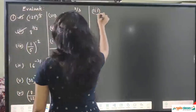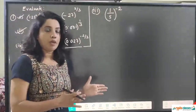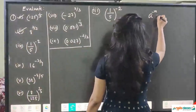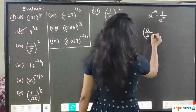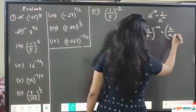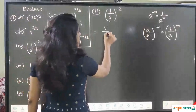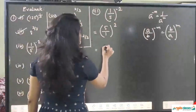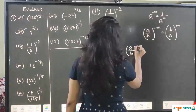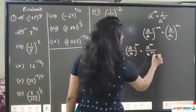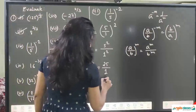Question 3 is (1/5) whole to the power minus 2. The power is negative, so we must first convert it to positive. Using the property (a/b) to the power minus m equals (b/a) to the power m, we write (5/1) to the power 2. Then applying a/b whole to the power m equals a to the power m upon b to the power m, we get 5² / 1² = 25 / 1 = 25. The answer is 25.